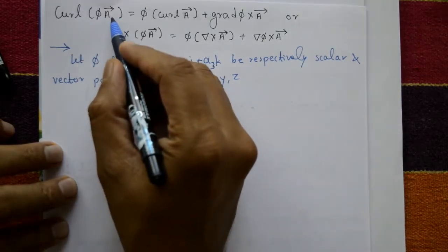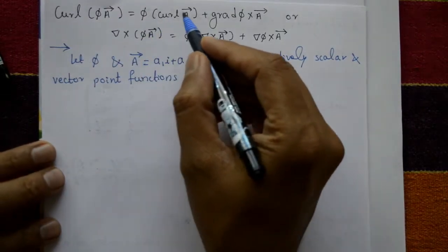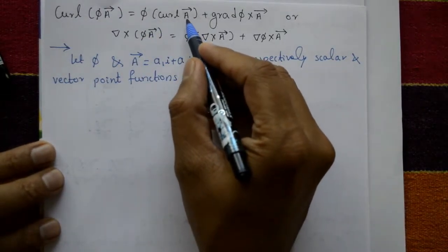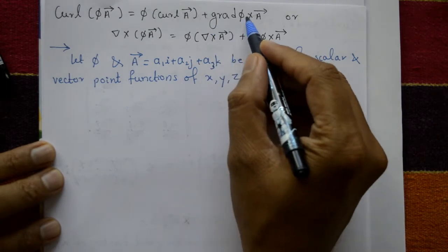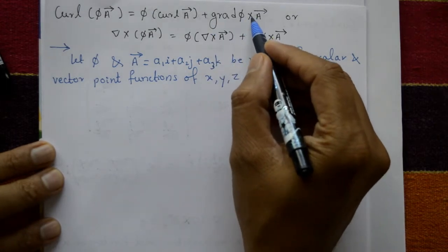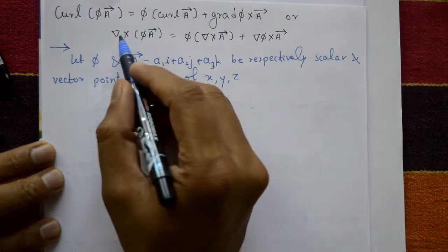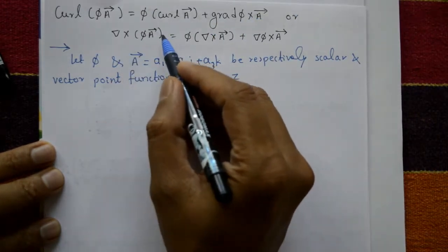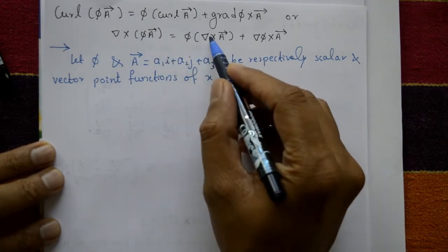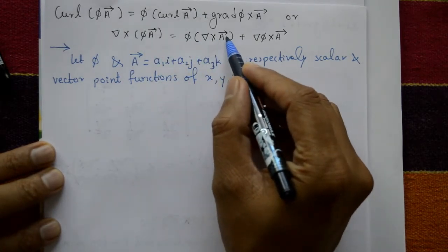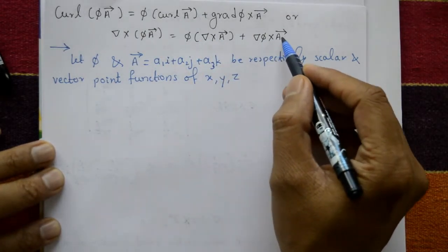The curl of φ times vector A is equal to φ times curl of vector A, plus gradient of φ cross vector A. In del notation: del cross (φA) = φ(del cross vector A) + (del φ) cross vector A.